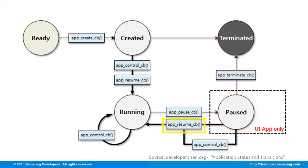Calling the app resume callback sends the app to the foreground and makes it visible for the user again. The last callback, app terminate, is responsible for terminating the event loop. It may be caused by an application request or even with the use of the low memory killer. The app is now terminated.